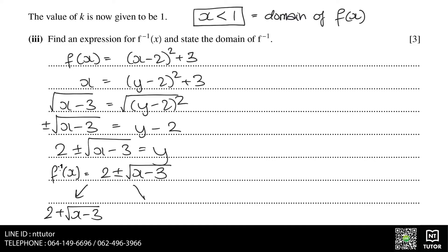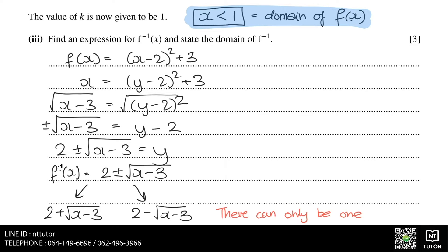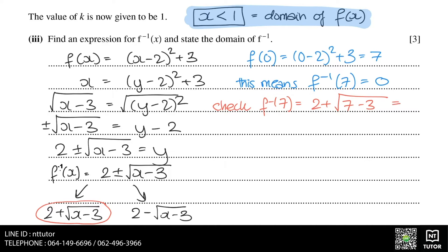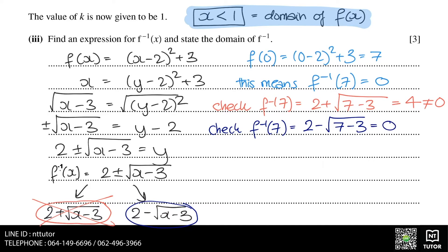This means we have two options for the inverse function, but there can only be one. Since the domain of f is x less than 1, we can substitute in a random coordinate within the domain, for example x equals 0. Substituting 0 into the function gives us 7, which means substituting 7 into the inverse function should give us 0. When we substitute 7 into 2 plus the square root of x minus 3, it gives us 4, which is not 0, so that version does not work. Substituting 7 into 2 minus the square root of x minus 3 gives us 0. Therefore, the inverse function equals 2 minus the square root of x minus 3.